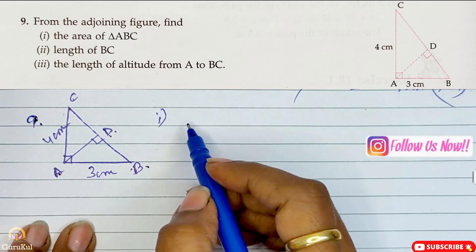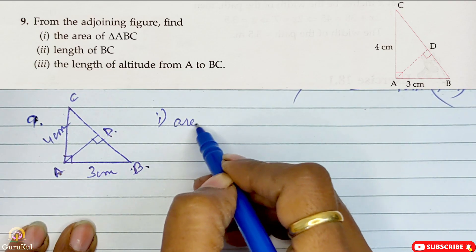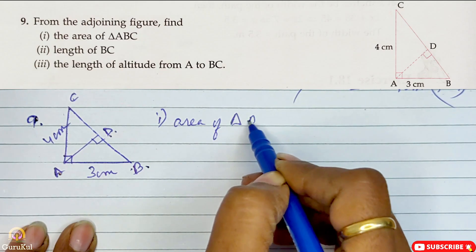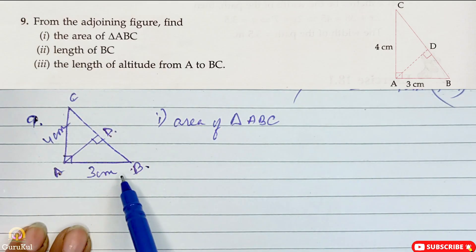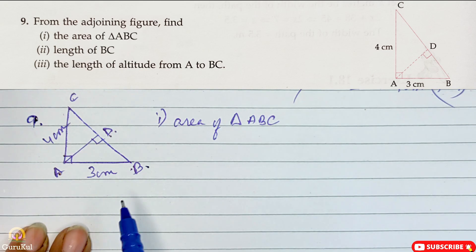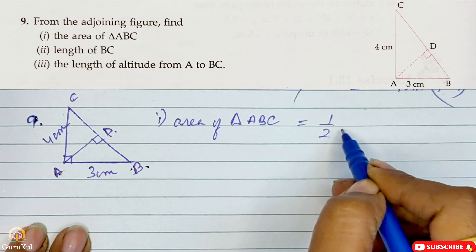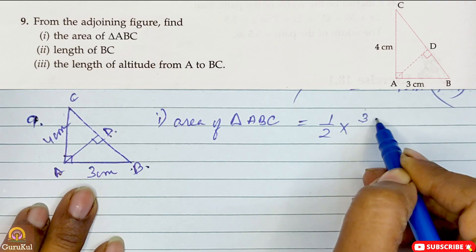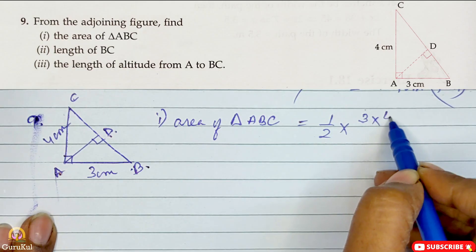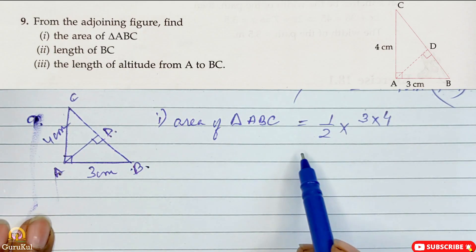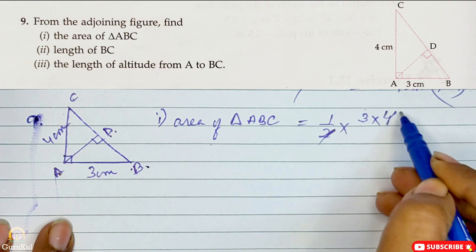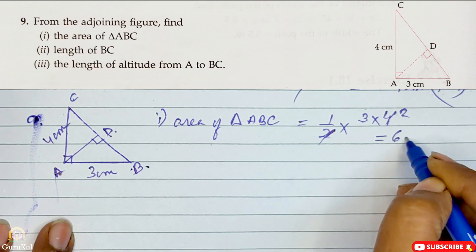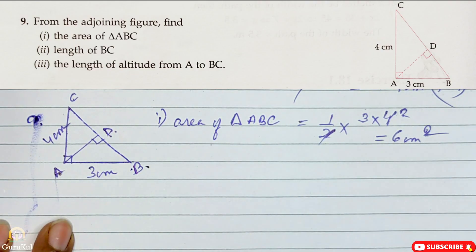So let us begin. The first part we need to find the area of triangle ABC. The formula for area of a triangle is: area is half into base into height. So that is half into base 3 cm into height 4 cm. 2 and 2, so that gives us 6 cm square. Part 1 solved.